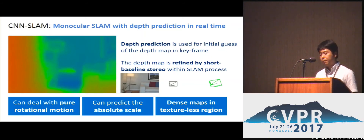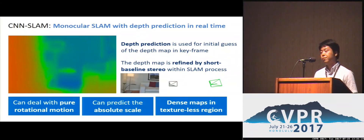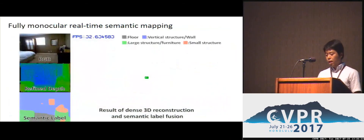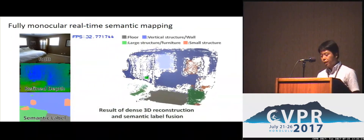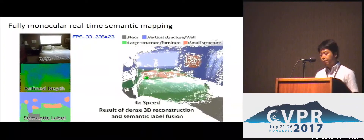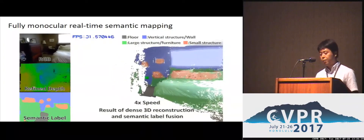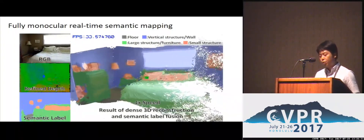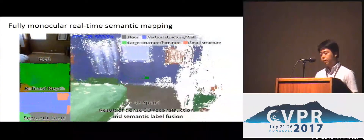Moreover, CNN SLAM can reconstruct dense depth in texture regions by holding predicted depth information in those regions. The depth map in each key frame is initialized by depth prediction and then refined within the SLAM process. Let me show the highlight of the depth refinement — the detail of the shape on the leaf and the shade, which was missing, is recovered by the refinement process.